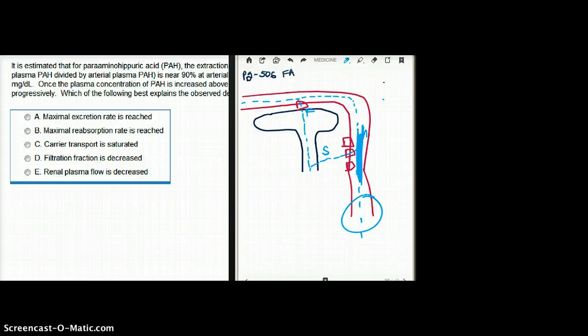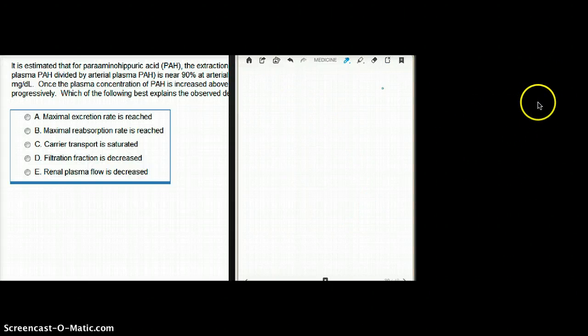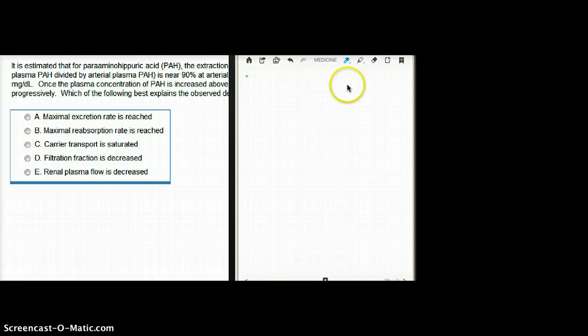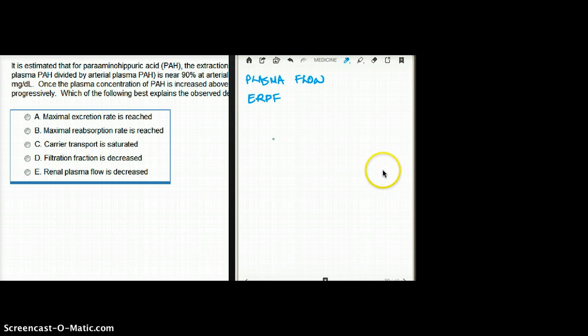So now that we understand PAH, let's talk about plasma flow. Because PAH is used to measure effective renal plasma flow. Now, what's interesting about kidney or kidney physiology is that any time they measure any flow in the kidney, there is one equation that they use. And they just switch it up here and there to make some changes. So let's say I'm just going to say flow, and this is the equation.